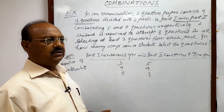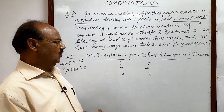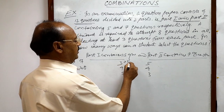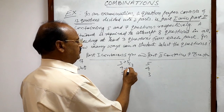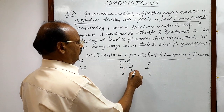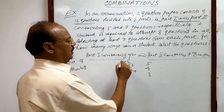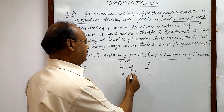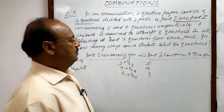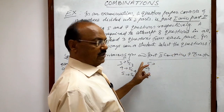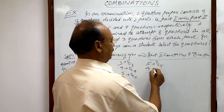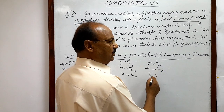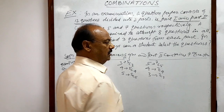Now, what are the different ways of selecting these questions? For the first option, Part 1 selections can be made in 5C3 ways, the second option in 5C4 ways — because Part 1 contains 5 questions — and the third option in 5C5 ways. Similarly, from Part 2 which has 7 questions: 5 questions can be selected in 7C5 ways, 4 questions in 7C4 ways, and 3 questions in 7C3 ways.